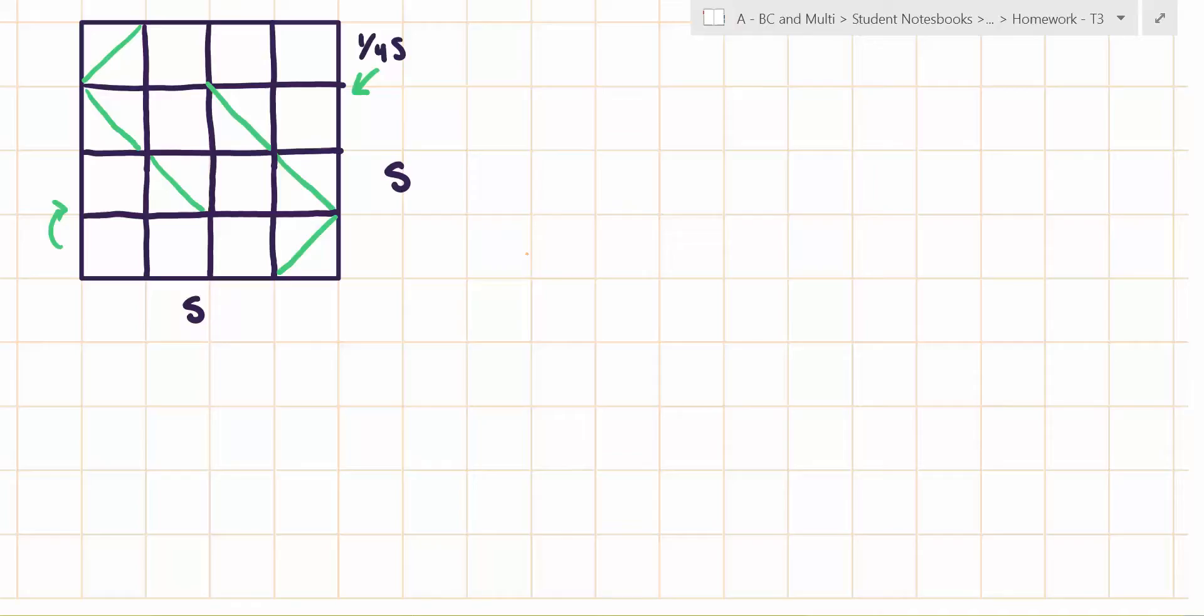So I'm trying to find the surface area of the 30-point star in terms of S, which is the side length of one of the origami squares.